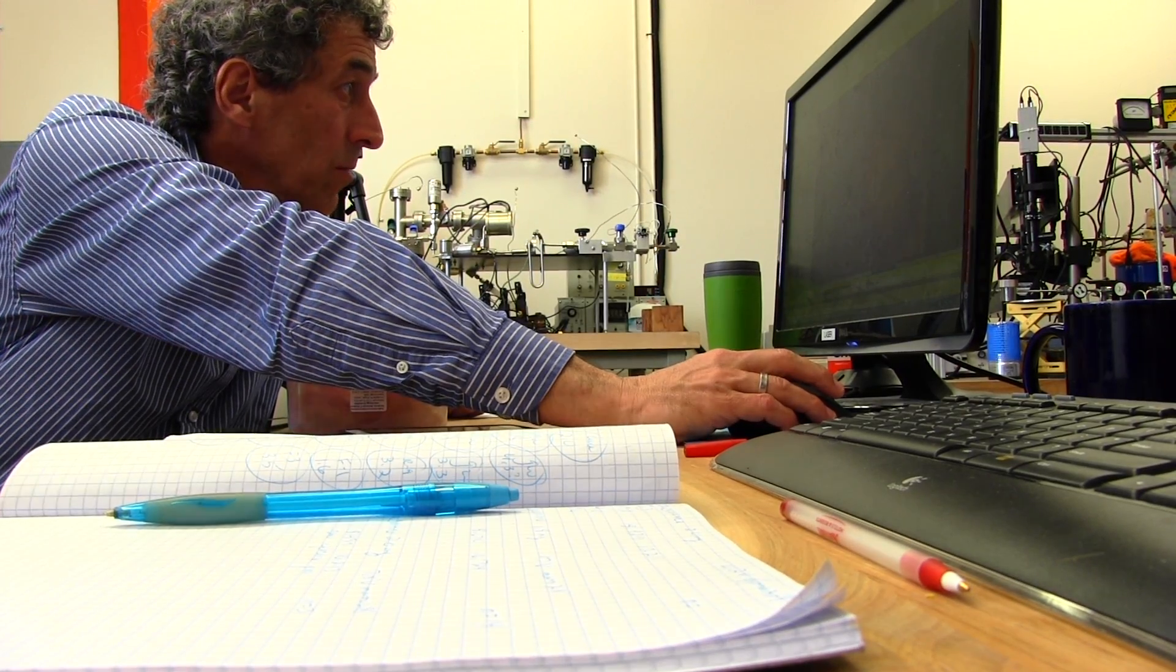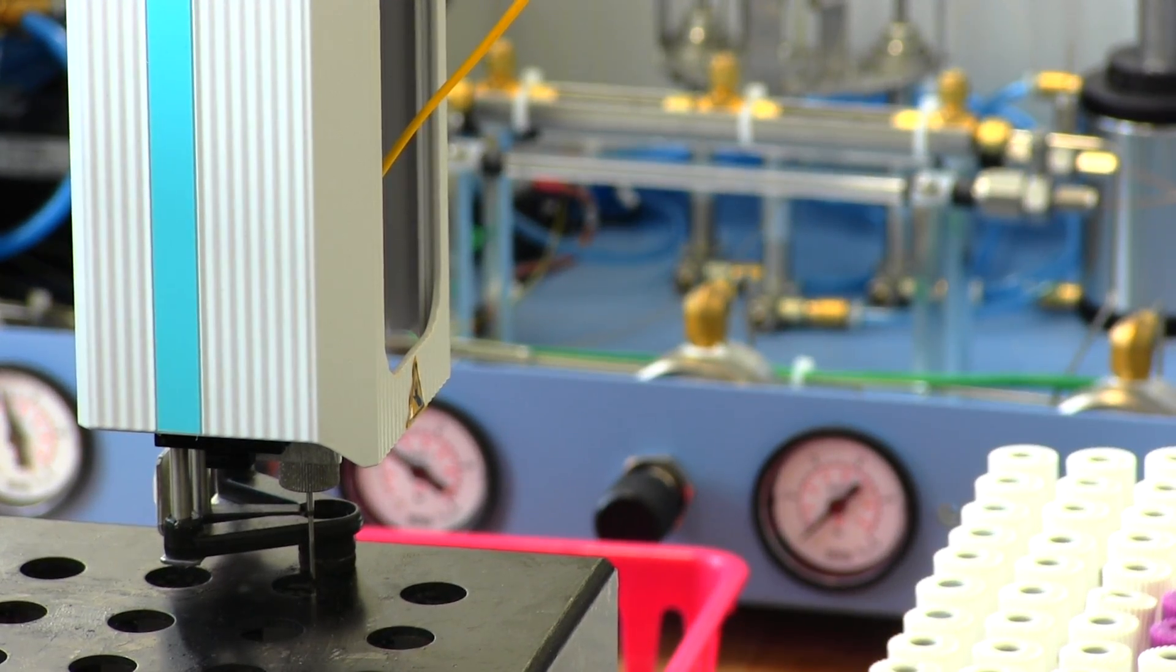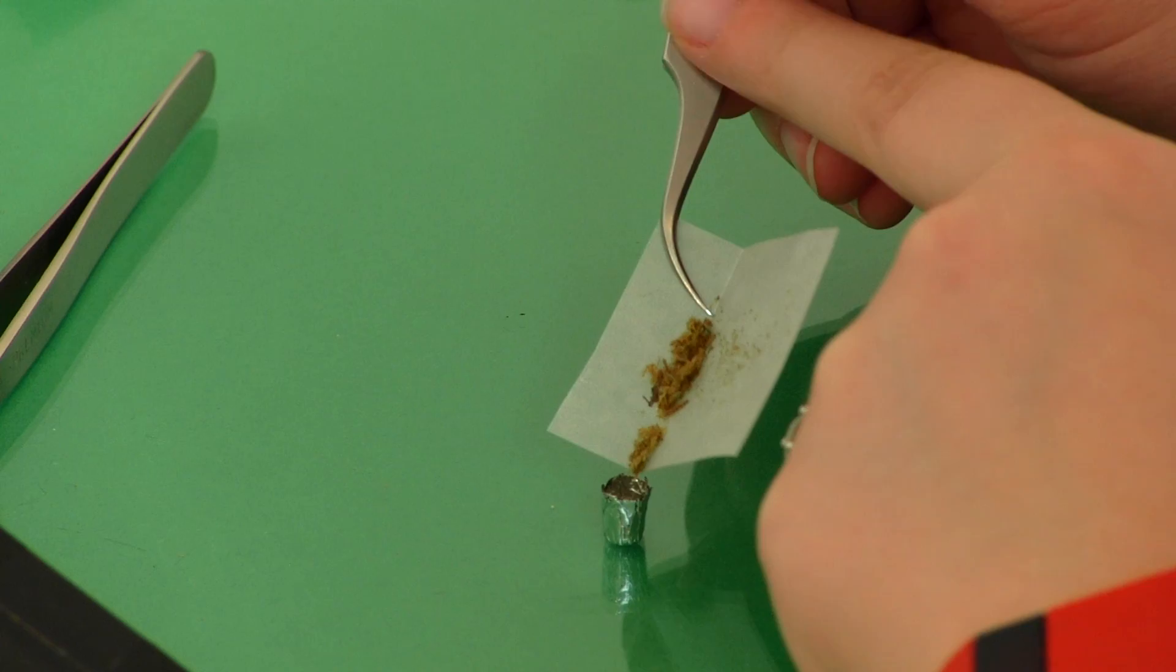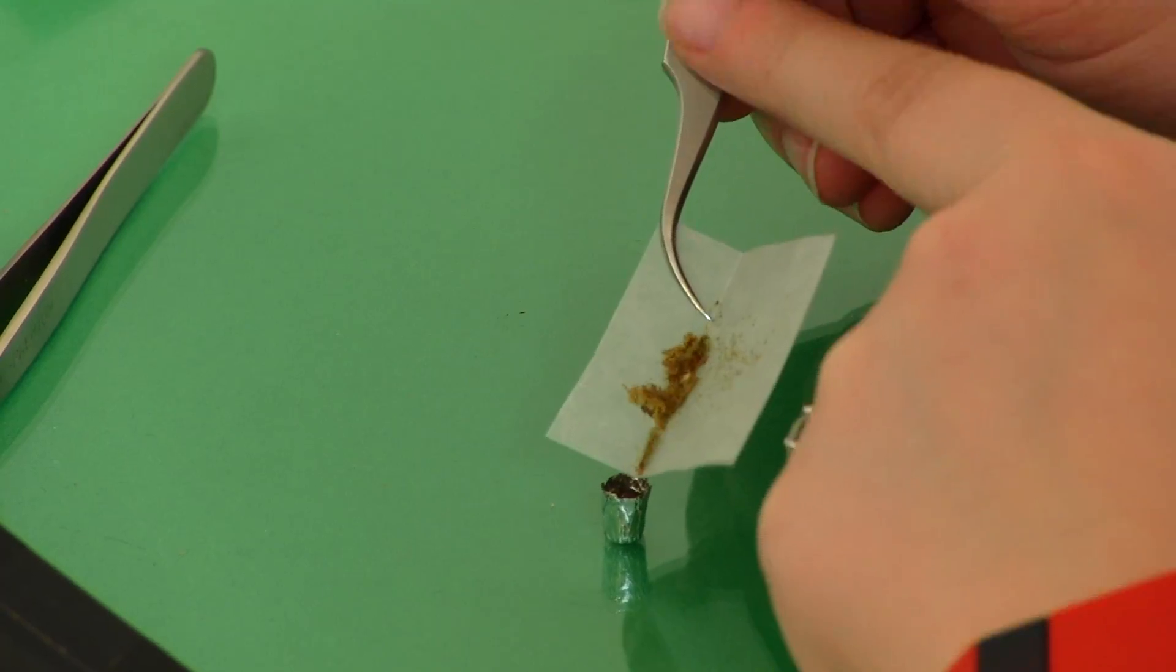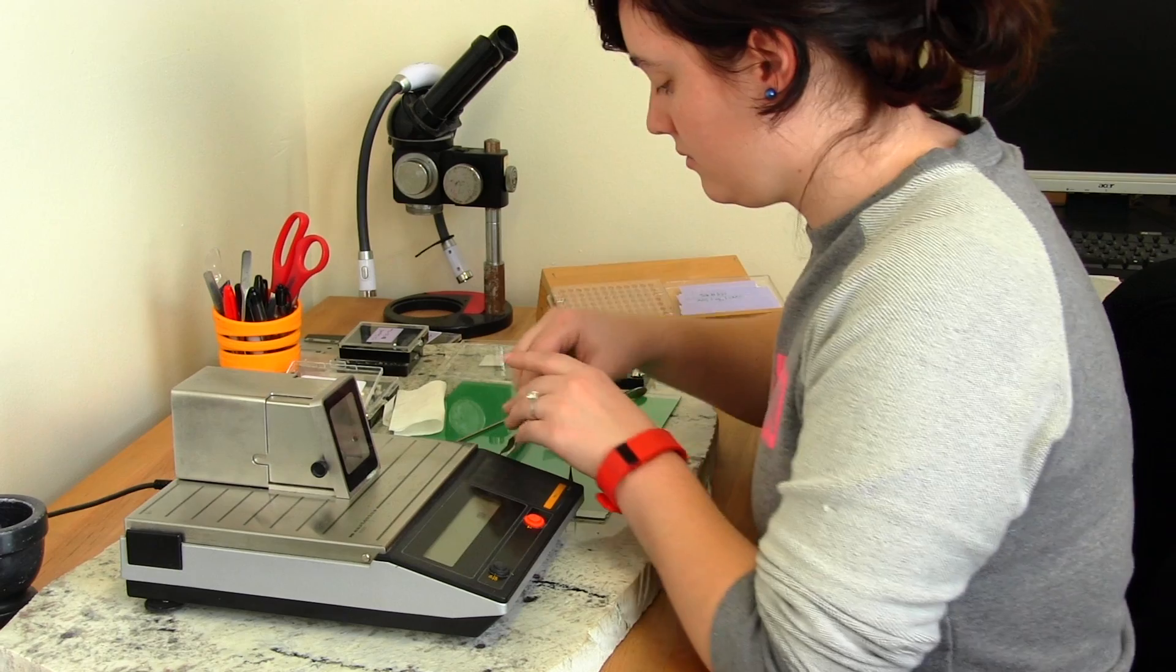We're measuring the isotope ratios of hydrogen, carbon, nitrogen, oxygen, sulfur, and chlorine in geologic materials, in biological materials, in anthropological or archeological samples.